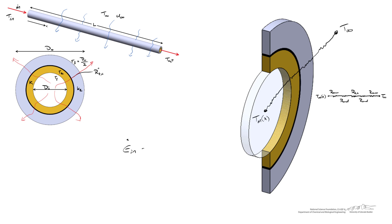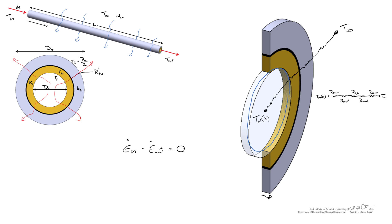We start with an energy balance: energy entering minus energy leaving plus any rate of energy generated equals the rate of energy stored. In this case the fluid is not generating thermal energy, and we are at steady state so the stored term equals zero. Our control volume is a thin slice of water of length dx. Energy is convected in from the back side, convected out from the front, and conducted out radially — one way in, two ways out.